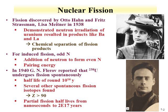When uranium-235 absorbs a neutron, that neutron pairs with the unpaired neutron in the uranium nucleus, providing additional pairing energy. That pairing energy induces fission. So odd-neutron heavy isotopes can undergo fission. In 1940, Georgi Flerov, a Soviet scientist, reported that uranium-238 underwent spontaneous fission — essentially another decay route. The uranium-238 spontaneous fission half-life is around 10^16 years, much longer than its alpha decay half-life of 4.5×10^9 years.